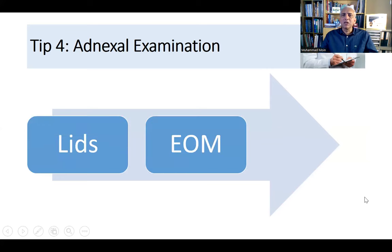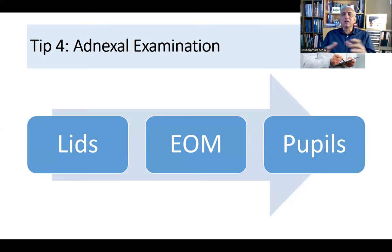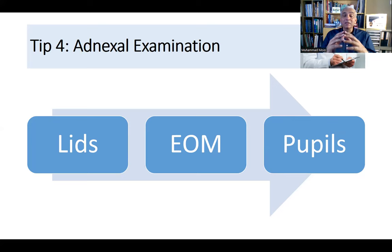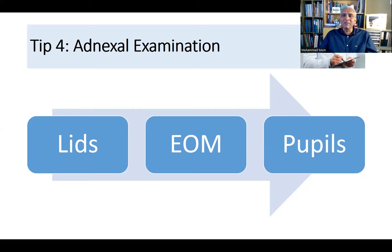Then we have adnexal examination — lid problems, extraocular motility problems, or pupil problems. For lids, the most common condition is ptosis. Measure the marginal reflex distance with the brow pressed down, not elevated, because lifting the brow artificially elevates the lid via skin traction. Always perform a Marcus Gunn jaw-winking test in these patients.